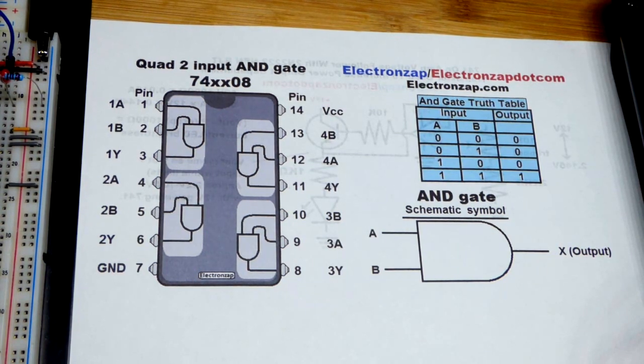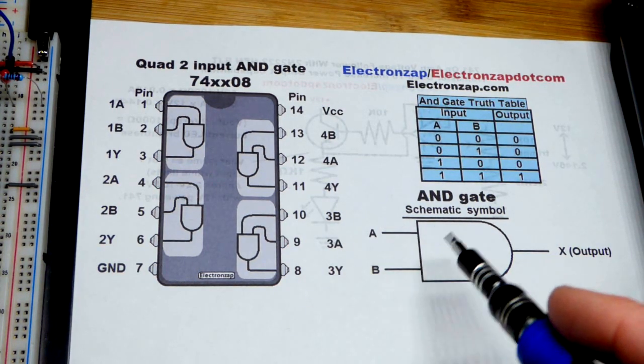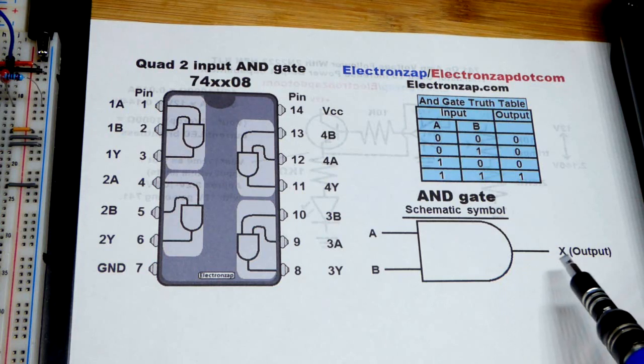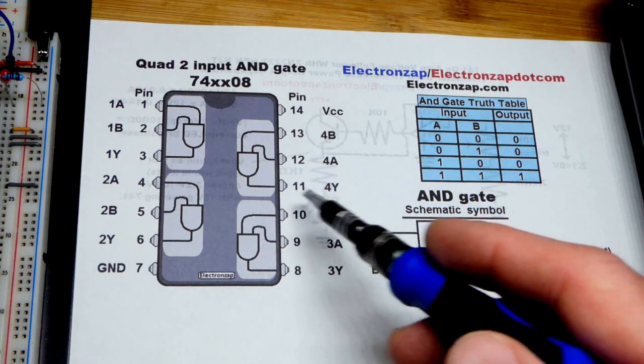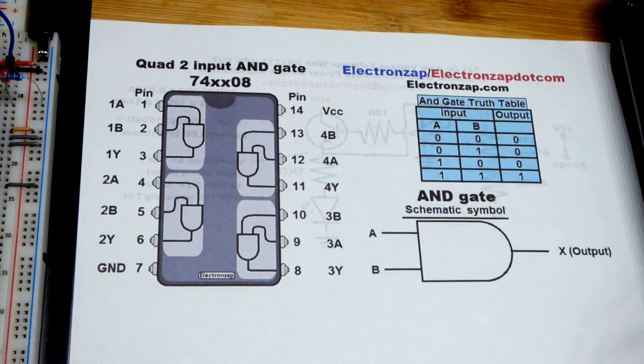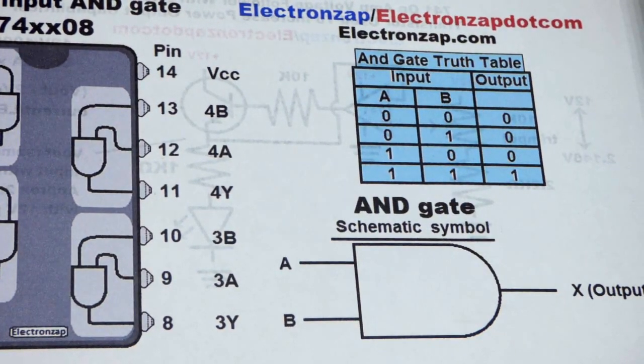There's also the LS version. So in any case, there's the AND gate schematic symbol. Sometimes you see X, sometimes you see Y for the output right there.